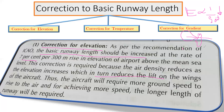The lift required for the aircraft to take off is reduced at higher elevations due to lower air density. As a result, the aircraft requires more ground speed to become airborne, and to achieve that greater speed, a longer runway length is required.